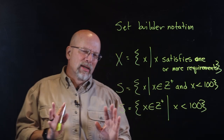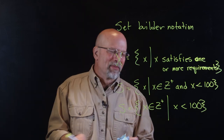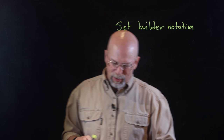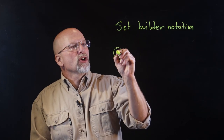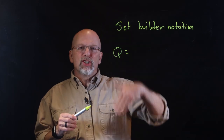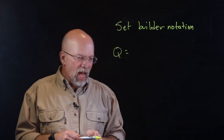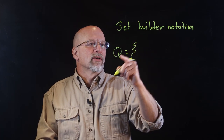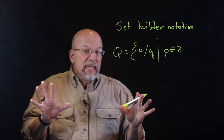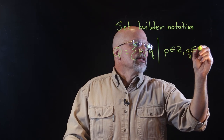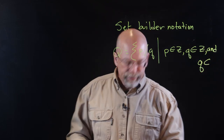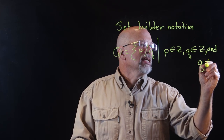The ellipsis means the pattern keeps going, but doesn't tell you exactly how to calculate the next one. Using set builder notation, let's define a couple of other special sets. Q is typically representative of the rational numbers. A rational number is a ratio of an integer to an integer, as long as the integer on the bottom is not equal to zero. So you'd write: Q = {p/q | p is an element of Z, q is an element of Z, and q is not equal to zero}.